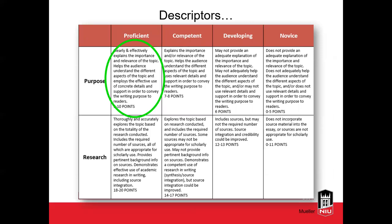The prior descriptor was shorter, while this particular descriptor is longer — it focuses on clearly and effectively explaining the importance and relevance of the topic, addresses the audience, and requires use of concrete details. When the student is creating their assignment, they would go through and check off those different key components of the proficiency standard. If they hit all of those, they should know they'd be in the proficient category. The same goes for each other level.